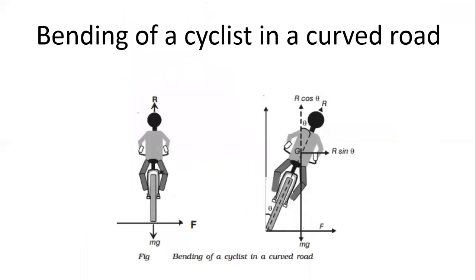This is the bending of a cyclist on a curved road. Initially the cyclist is upright, but if the road is curved the cyclist must lean. The bending angle is theta. We resolve the reaction force R into components: R·sin θ and R·cos θ.